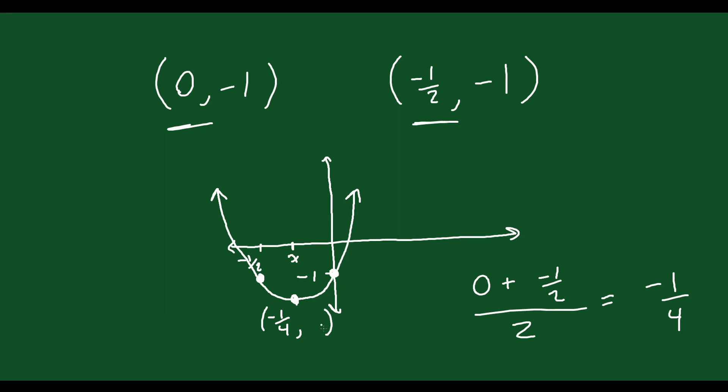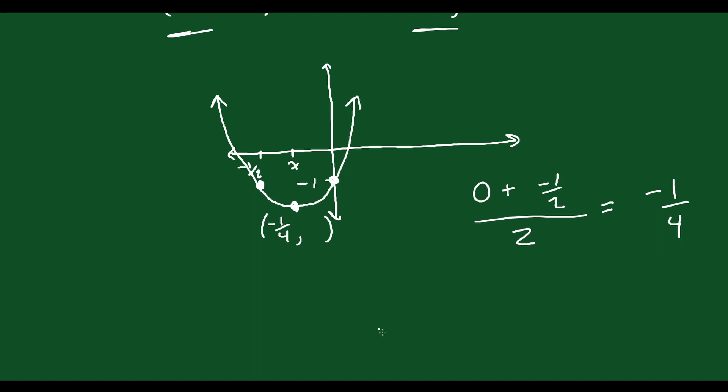And so if you want to find the y value, you just have to plug negative 1 quarter back into your original equation. So y is going to equal 2 times negative 1 quarter squared plus negative 1 quarter minus 1.